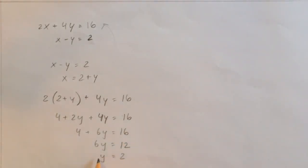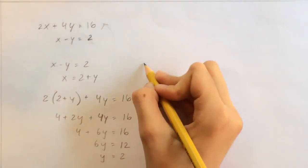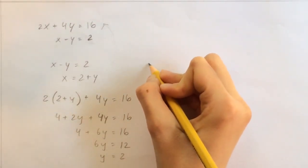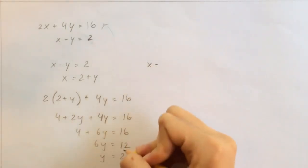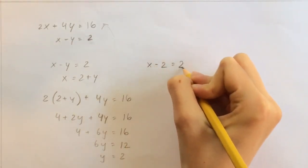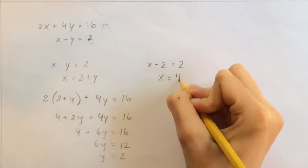So now that we have our y, we can plug it in again to either of the formulas. So let's use the easier formula again. So let's plug y equals 2 into this formula. So we're going to substitute everything for y. And what we have now is x minus 2 equals 2, and that would become x equals 4.